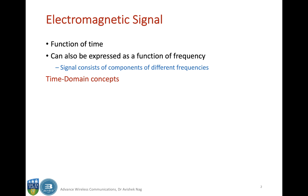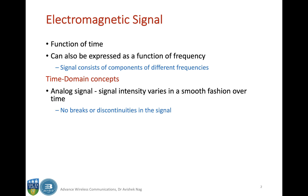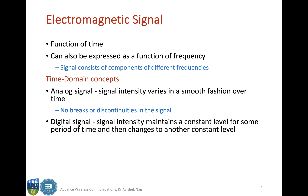Now let us focus on time-domain concepts first. In the time domain, if your signal smoothly varies with time — a continuous function of time without any breaks or discontinuities — it is called an analog signal. In contrast, we have a digital signal where the signal intensity maintains a constant level for some period of time and then jumps to another constant level. For example, in a binary digital signal, the signal level can jump between 1s and 0s, and this pattern repeats.